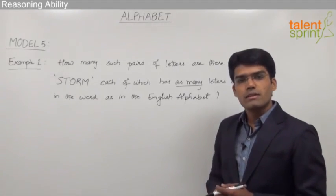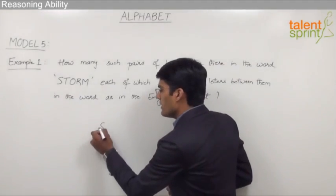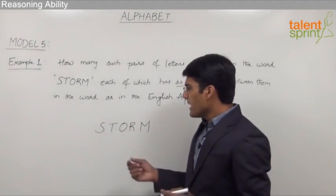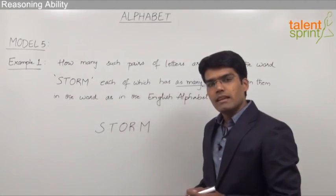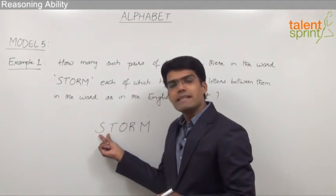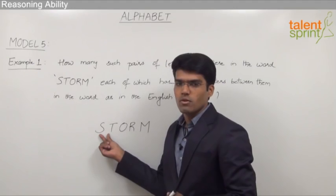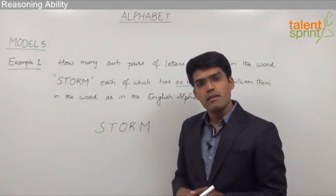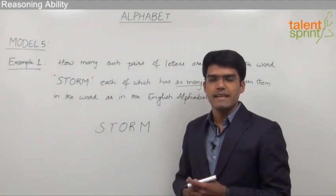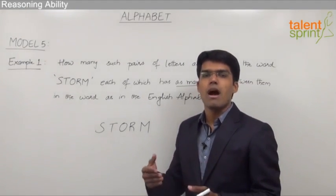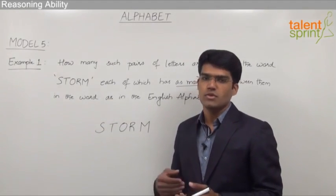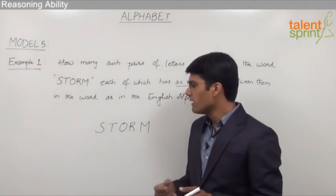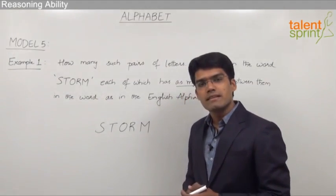Let us see how to solve this question. The given word is STORM. If you take the pair of letters S and T, there is no letter between S and T in the given word STORM. And even in alphabetical order, there is no letter between S and T — the sequence is ...R, S, T, U, V... So S and T can be taken as a correct pair.